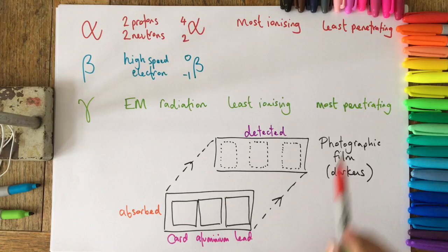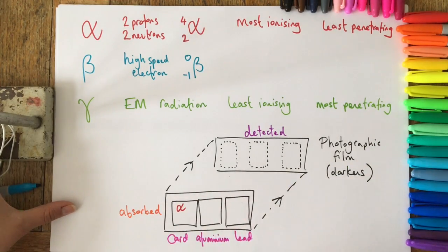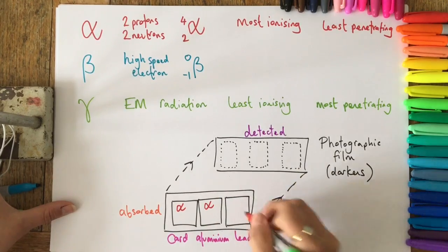Starting with alpha particles, we know that these are the least penetrating, so they get absorbed by card, by aluminum, and by lead. So they don't get detected behind any of these windows.